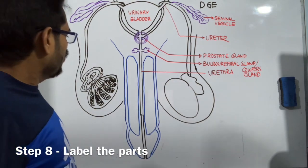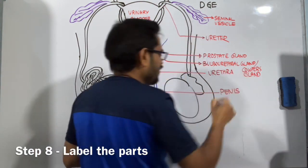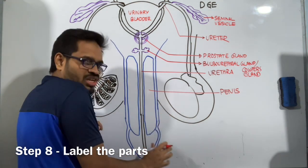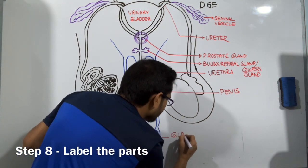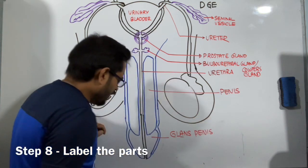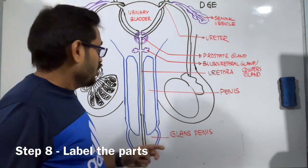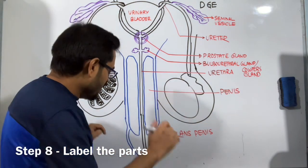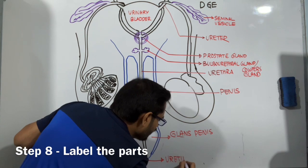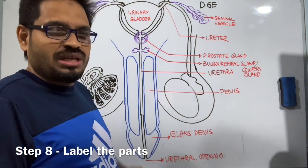Now this muscular structure is called penis, which is a part of the external genitalia. At the edge of the penis, we can see a bit plushy lop-like structure and that's called glans penis. The glans penis ends with a tip that has an opening. Remember, this is a common opening for both urine as well as sperms to be ejaculated. That opening is called urethral opening, or urethral meatus.